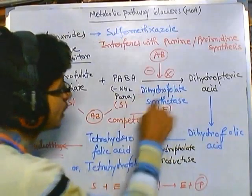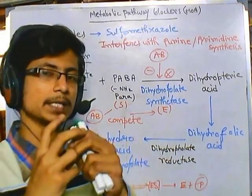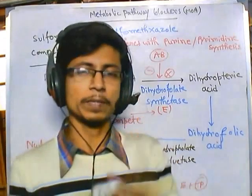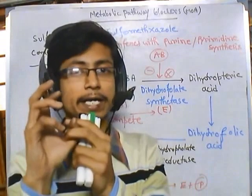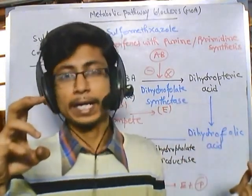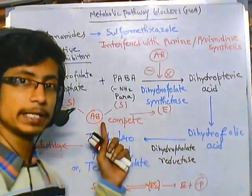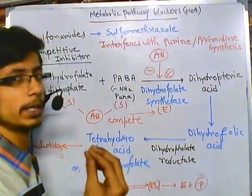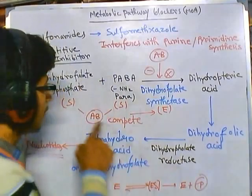They can alter the structure of the enzyme. Remember, enzyme structure is very important. If we distort the enzyme structure or its active site, it may not be able to bind with the substrate or the antibiotic. In this case, bacteria distort the enzyme shape or structure in such a way that it is still able to bind with the substrate, but it is unable to bind with the antibiotic.